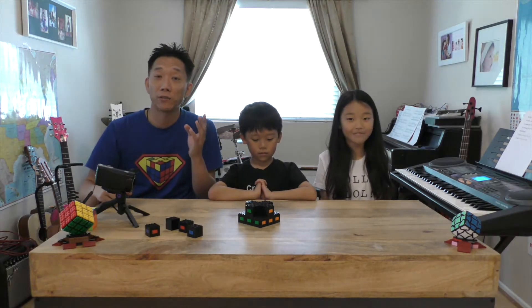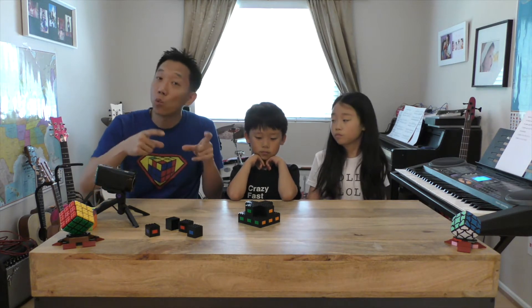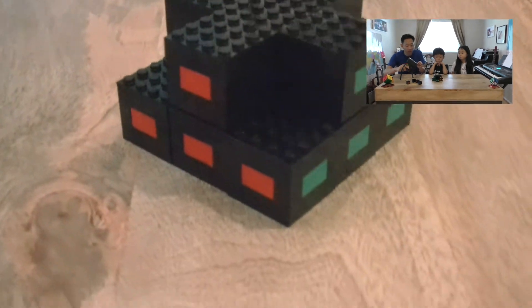Okay, so if you have done all the white edge pieces at the bottom, making a white cross, and you've done the white corners, then your cube should look something like this.